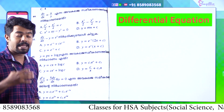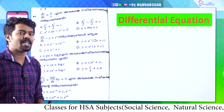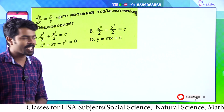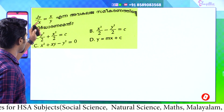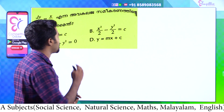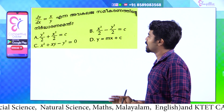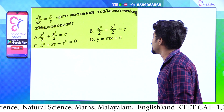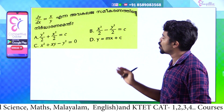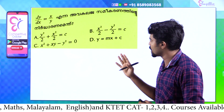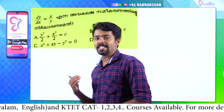The question is: how can we answer the question in this video? So in this question, dy/dx equal to x by y — how can we answer the question? Option A: y² / 2 plus x² / 2 equal to c. Option B: x² / 2 minus y² / 2 equal to c. Option C: x² plus xy minus x² equal to 0. Option D: y equal to mx plus c. How can we answer this question?